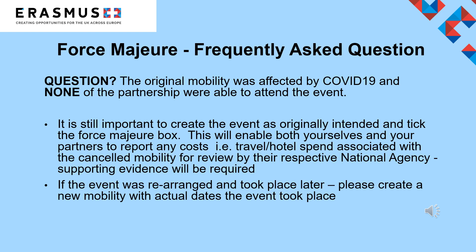Here's a frequently asked question about force majeure. If the original mobility was affected by COVID-19 and none of the partners were able to attend, the event as originally intended should still be created to allow any unrecoverable costs to be reported. If the event was rearranged and took place later, please create a new mobility with the actual dates. For other force majeure events, please refer to your contract under the General Conditions Annex 1 — the mono-beneficiary version is available on the website.